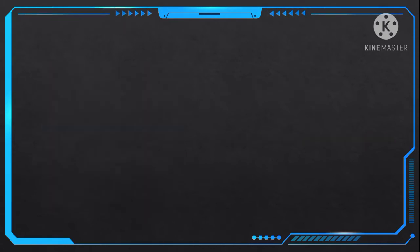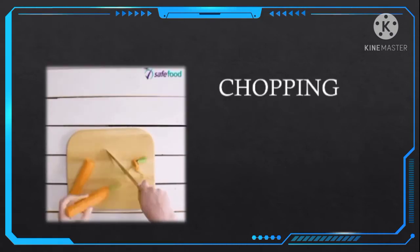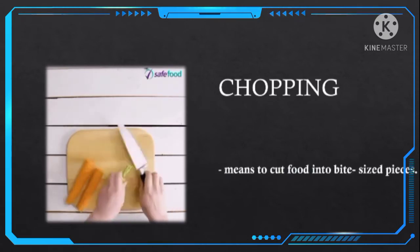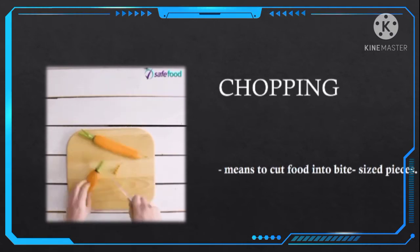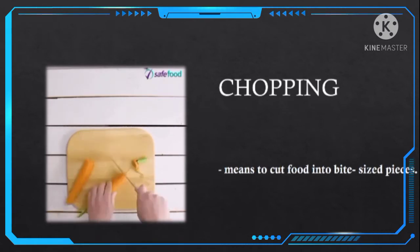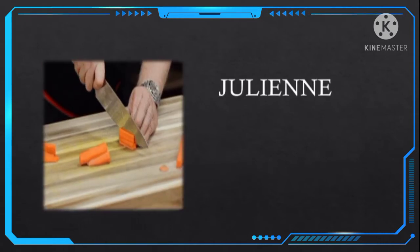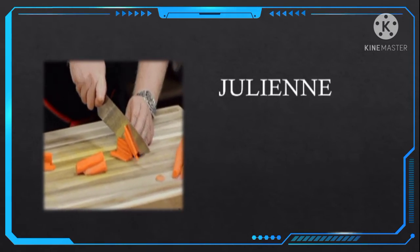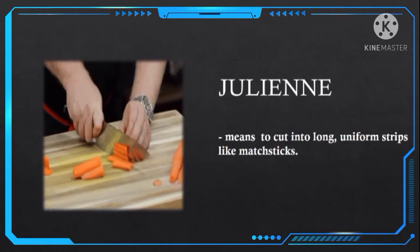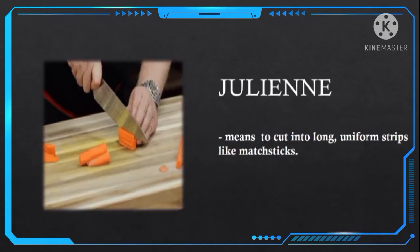Let's see the next picture. That picture shows what kind of cutting technique. Very good! That is chopping. And chopping means to cut food into bite-sized pieces. Let's see the last picture. So that picture shows what kind of cutting technique. Very good! Julienne! And julienne means to cut into long uniform strips like matchsticks.